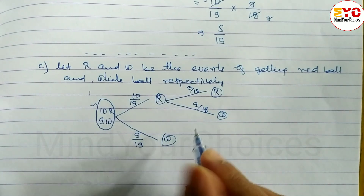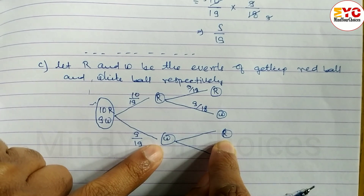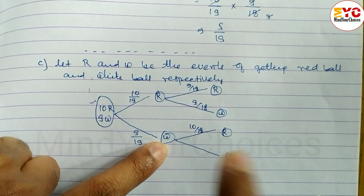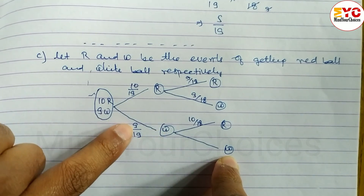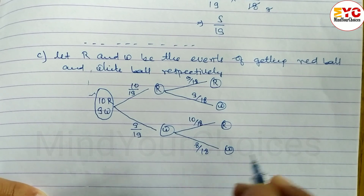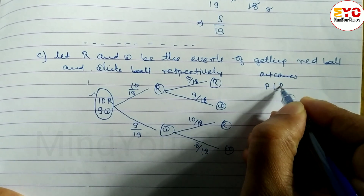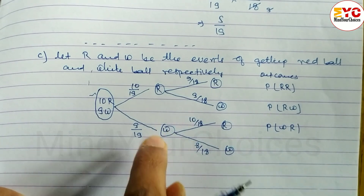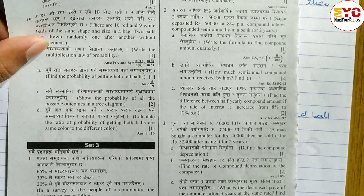If the first ball is white, the second ball can be red or white. If the second is red, total is 18, so 10/18. If the second is white, red count is same and white decreases, so 8/18. The outcomes from the tree diagram are: RR, RW, WR, and WW.